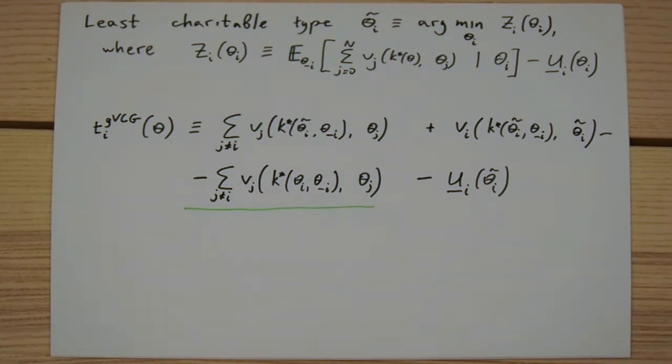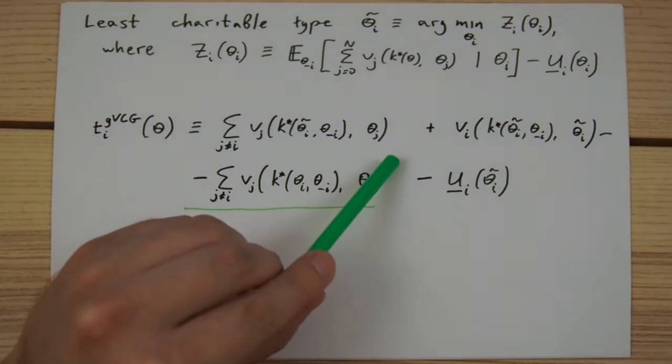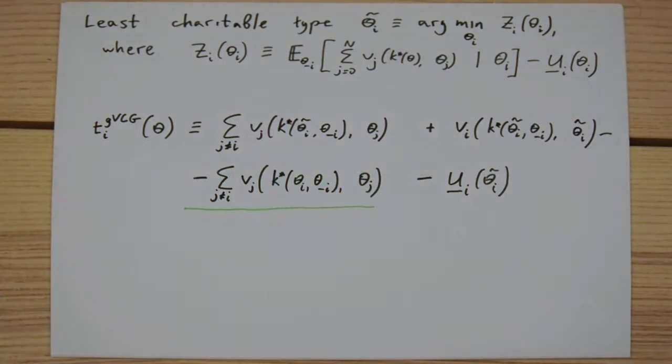One of the terms in this constant is reminiscent of the Clark's term in the VCG transfers, except instead of ignoring player i when selecting the allocation, it assumes that player i is of the least charitable type.